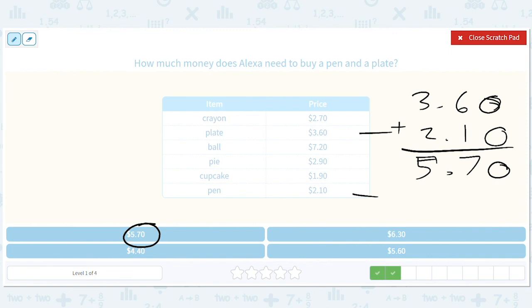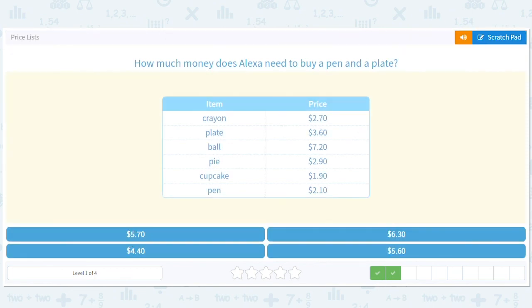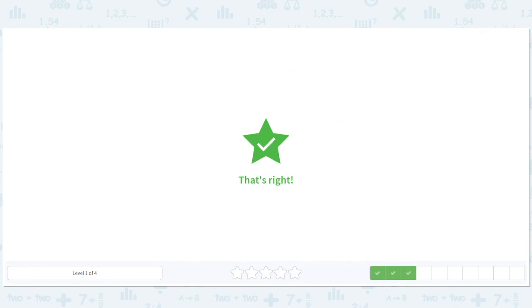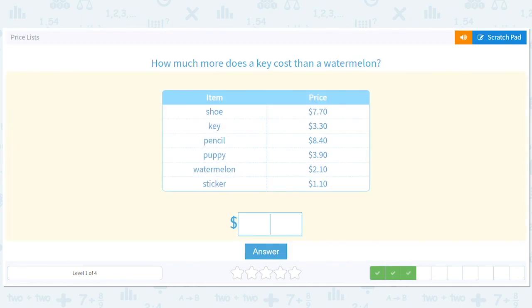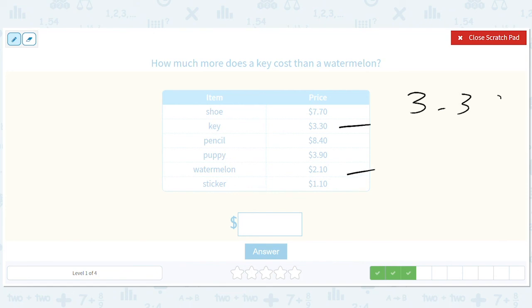How much more money does a key cost than a watermelon? A key is $3.30, a watermelon is $2.10. We take our $3.30 and subtract our two dollars and ten cents. How much more does the top cost than the bottom? Zero, three minus one is two, three minus two is one. So it's a dollar twenty more expensive.